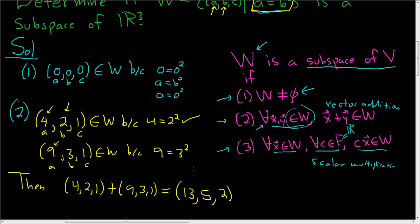If this is in W, then a must equal b². Here a is 13, b is 5, and c is 2. Is 13 equal to 5²? No, it's not. So this is not in W because 13 is not equal to 25. We have two vectors in W whose sum is not in W. So this is not closed under vector addition, and therefore it's not a subspace.